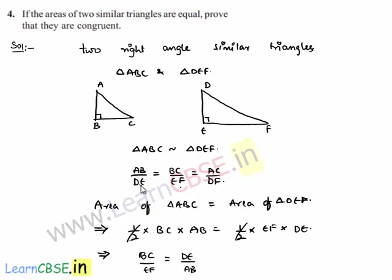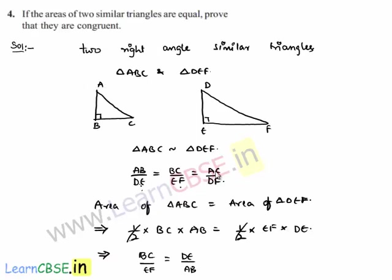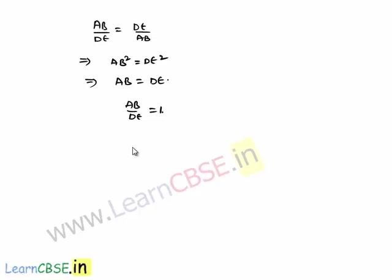Similarly, since AB by DE equals one, we can say that AC by DF equals one, which implies AC equals DF.